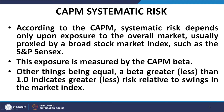We discussed the CAPM beta at the beginning of the previous class. Other things being equal, a beta greater or less than 1.0 indicates greater or less risk relative to swings in the market index.